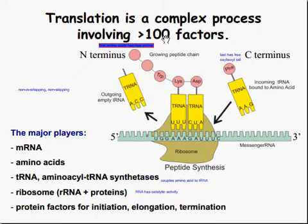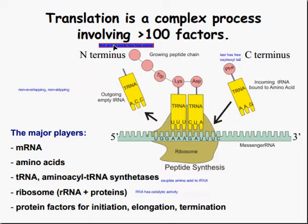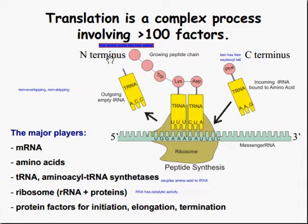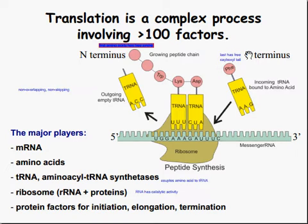Translation is a complex process involving greater than 100 factors. The first amino acid has a free amine group, which you'll find at the top — the N-terminus. This is your growing peptide chain. The last one has a free carboxyl — C-terminus. C for carboxyl, N for amine.